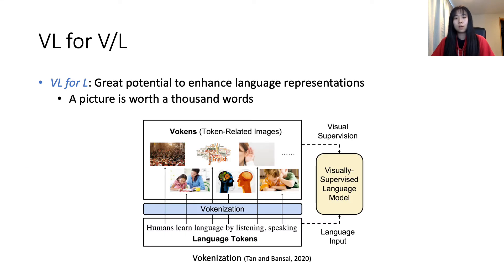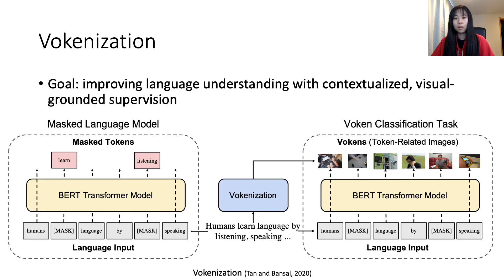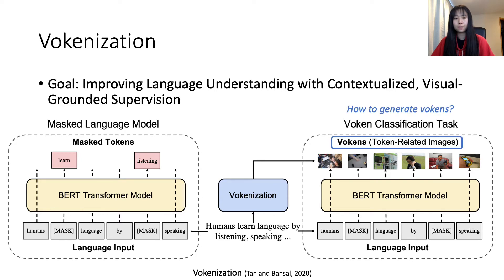What about the other direction — vision-language for language? As the old saying goes, a picture is worth a thousand words. Vision-language also has great potential to enhance language representations. An initial attempt along this direction is Vulcanization. In Vulcanization, the authors aim to improve language understanding with contextualized visual-grounded supervision. Specifically, they design a Vulcan classification task as an additional pre-training task: to retrieve token-related images, known as Vulcans, for the language input.